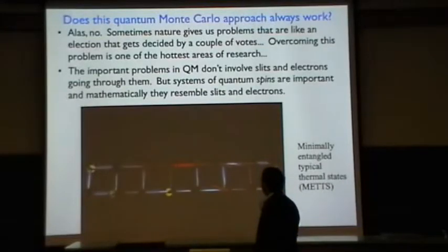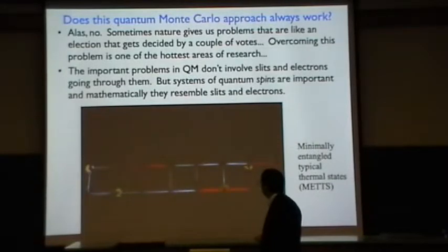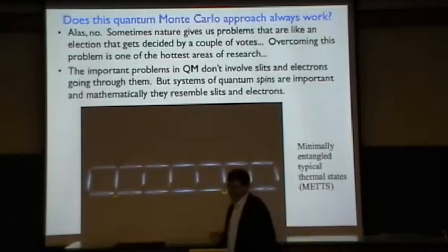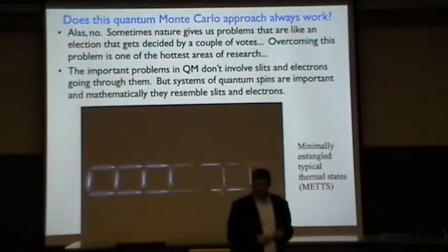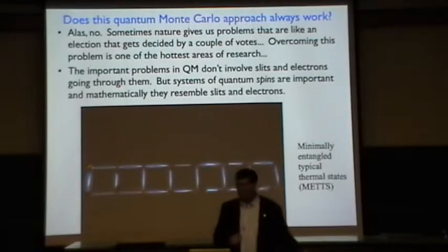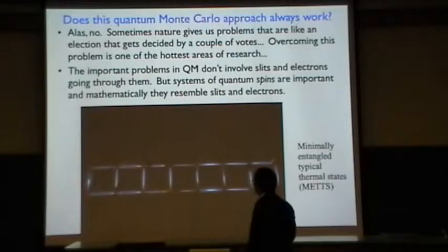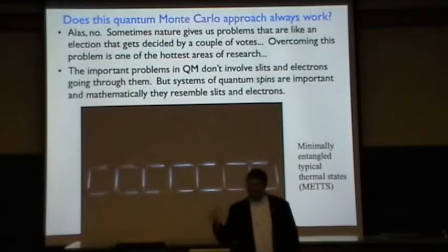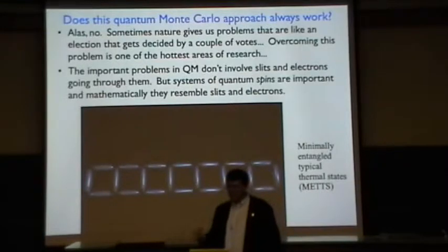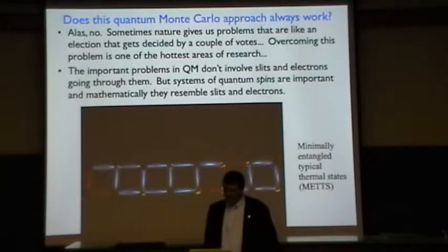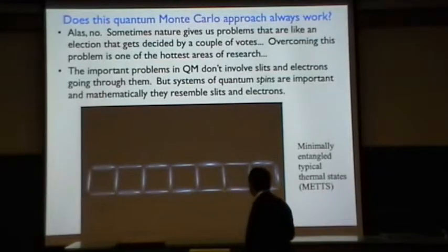You really need to know it too precisely. So one of the most important areas of research is how do you get around this? Do we find a way to adapt quantum Monte Carlo to do this? Or do we find another way of looking at the problem, another way of looking at the computer?